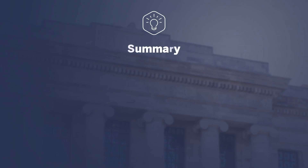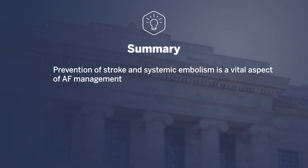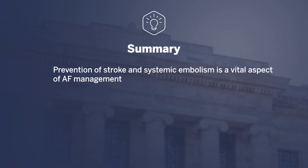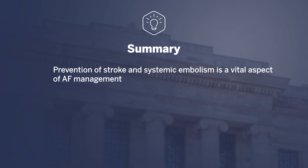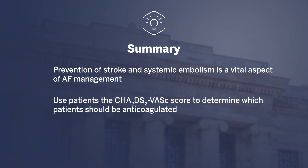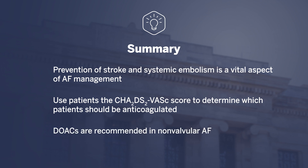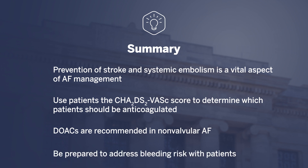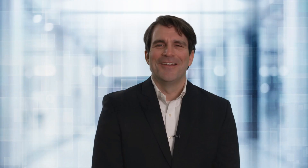In conclusion, the prevention of stroke and systemic embolism is a vital aspect of AFib management. You should use the CHADS-VASc score to determine which patients should be anticoagulated. Direct oral anticoagulants or DOACs are recommended in non-valvular AFib, and be prepared to address the bleeding risk with patients when you start an anticoagulant. Thank you for your time and attention — I hope you found this video educational.